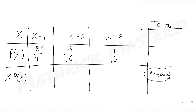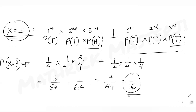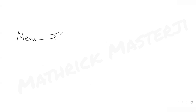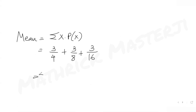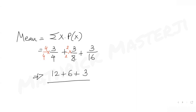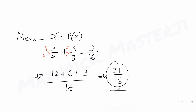Now multiplying X by P(X): for X=1, 1 times 3/4 equals 3/4; for X=2, 2 times 3/16 equals 3/8; for X=3, 3 times 1/16 equals 3/16. To find the mean, we sum all of these: 3/4 plus 3/8 plus 3/16. Finding a common denominator of 16, that is 12/16 plus 6/16 plus 3/16, giving 21/16. So the mean value of X is 21 over 16.